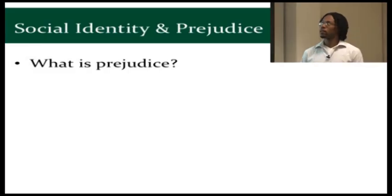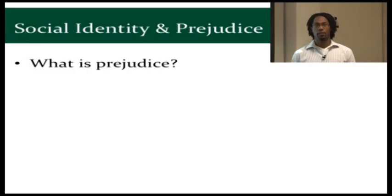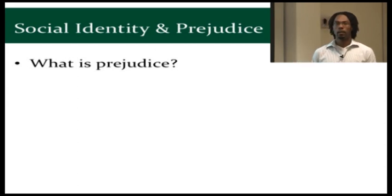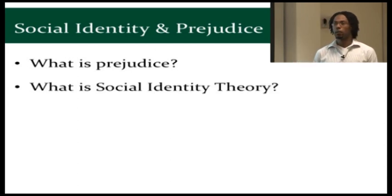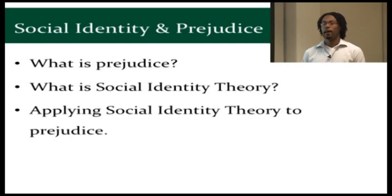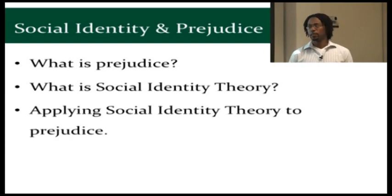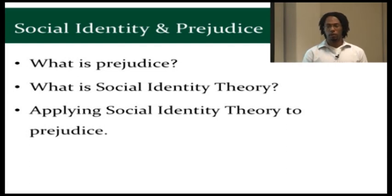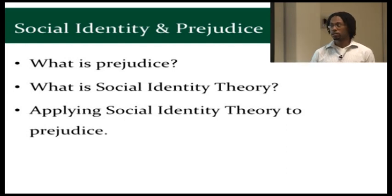Now, in order to talk about that, I'll have to talk about a few things first. First, I'll have to define prejudice, say what prejudice is, and then I'll have to talk about what social identity theory is. After that, I will then apply social identity theory to prejudice, so use what we know from social identity theory to explain prejudice, as we know it.